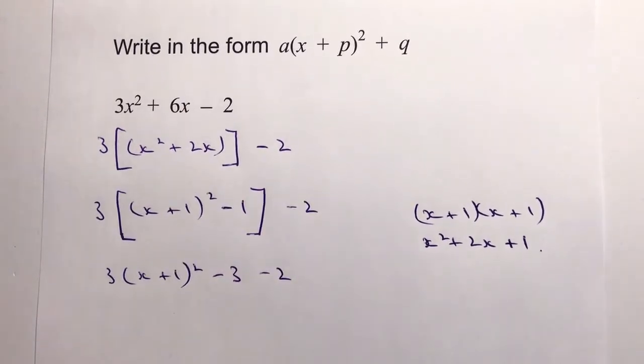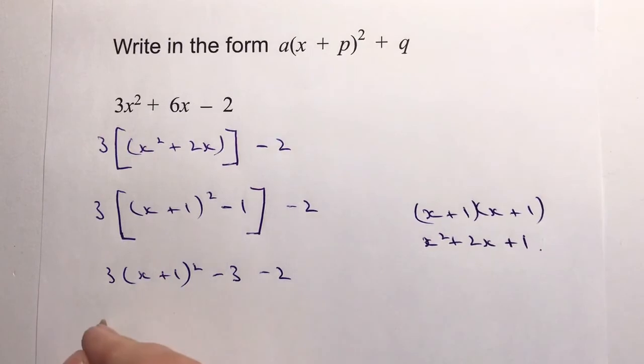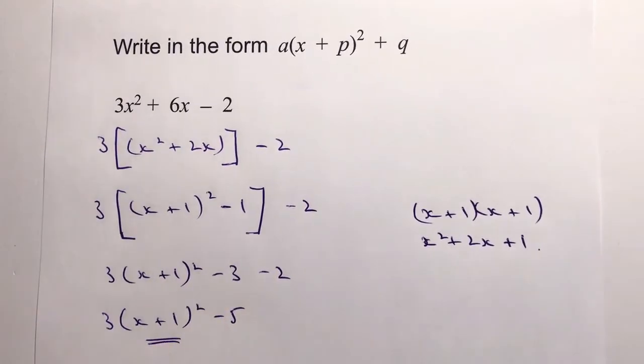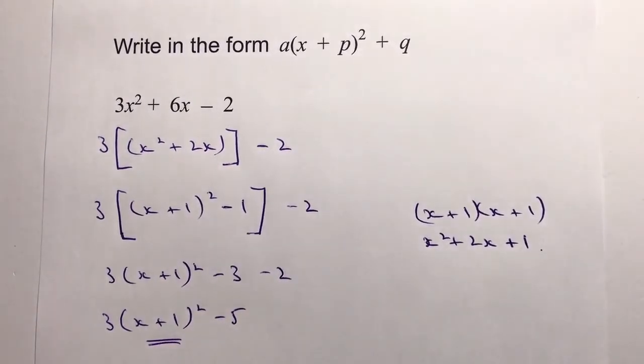Then I've also got -2 towards the end. So I can gather up those numbers and write that as 3(x + 1)² - 3 - 2, which is -5, and that is the end of this particular question.